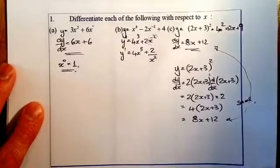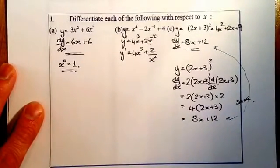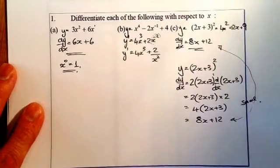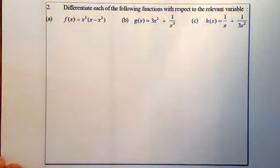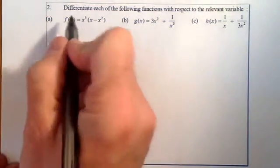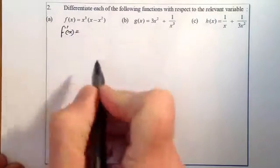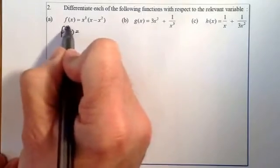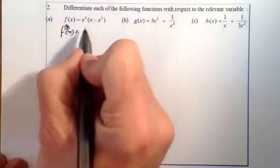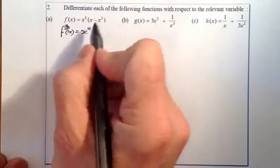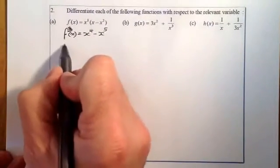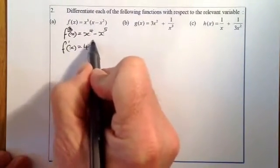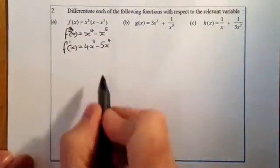Now for more complex questions involving indices. For question 2: f(x) = x³(x − x²). First multiply out the bracket: x³ × x = x⁴, and x³ × (−x²) = −x⁵. Remembering that when multiplying indices we add them. Differentiating gives f′(x) = 4x³ − 5x⁴.